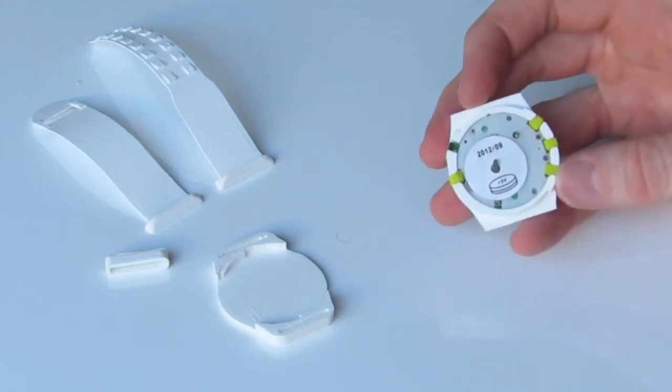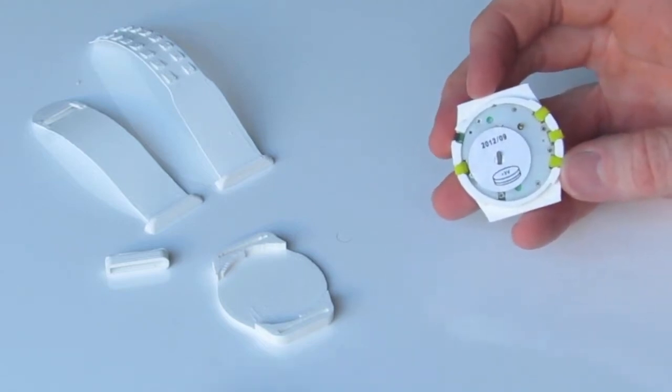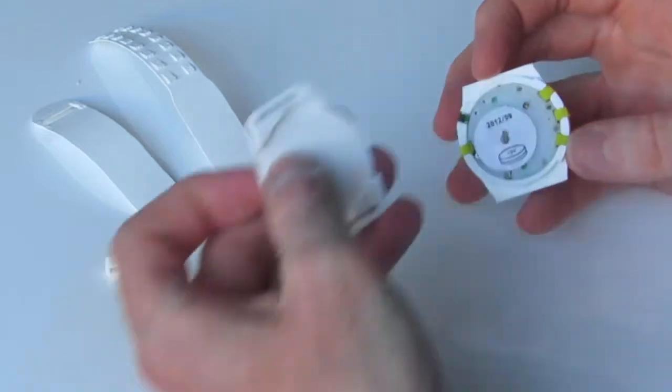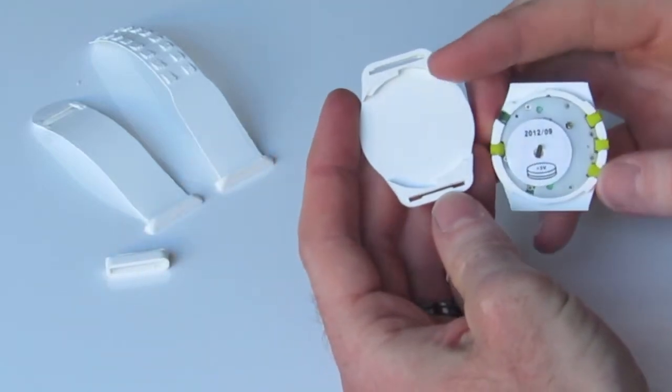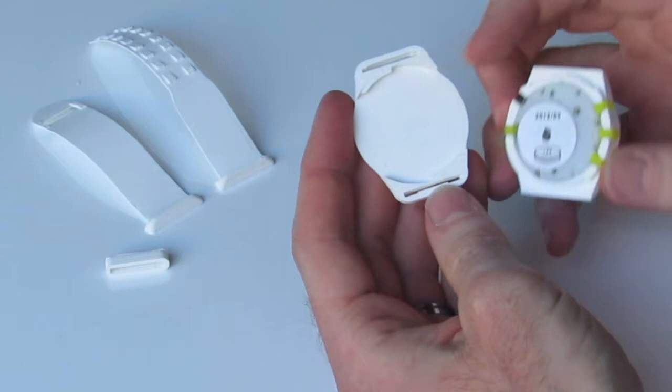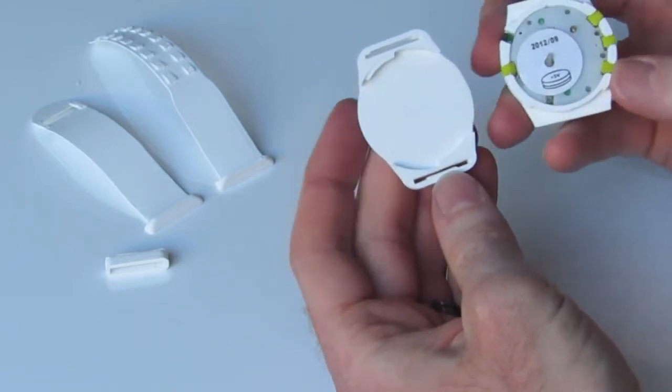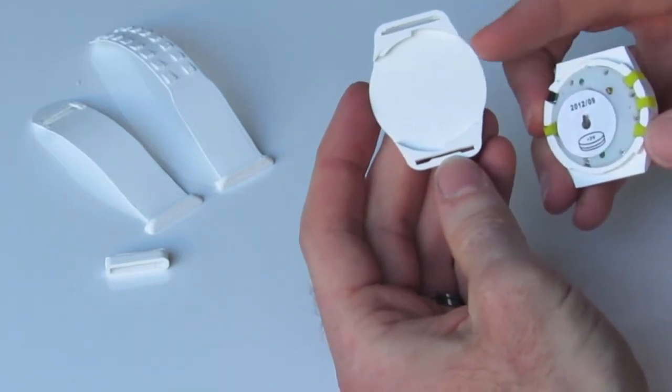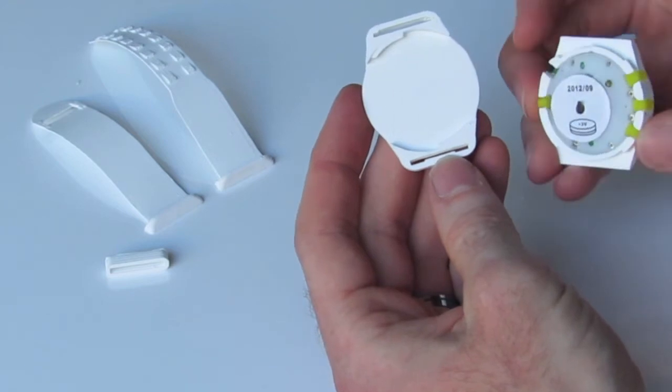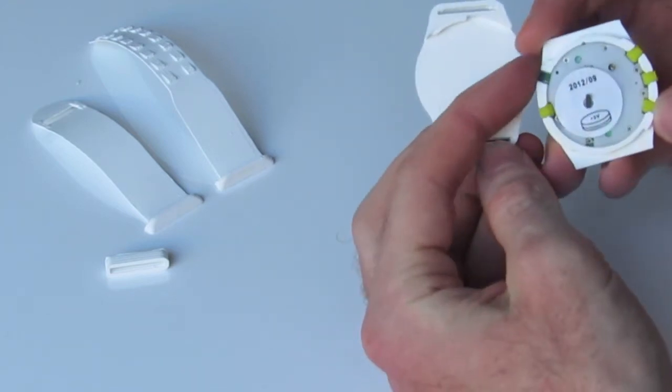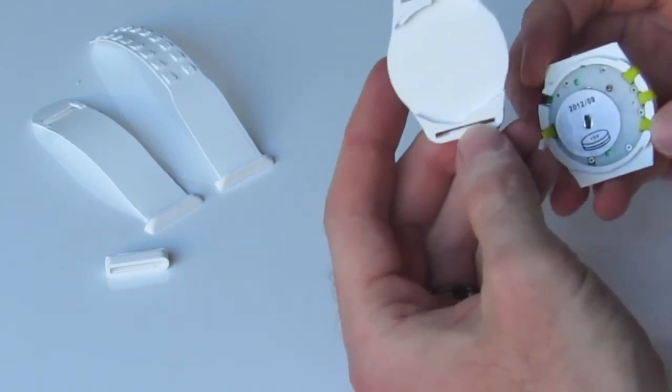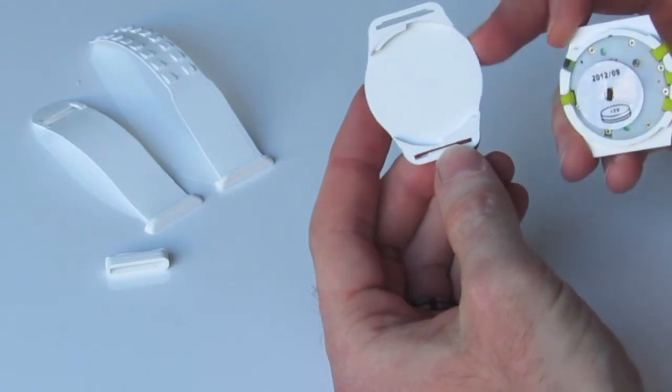Once you've got all your buttons in, we put the back of the watch on or the bottom of the watch. Now this inserts with a little circular keyway. Just notice how there's a slight irregularity in this side. That side lines up with the sensor. So this part is not perfectly symmetrical, just take note of that side there.